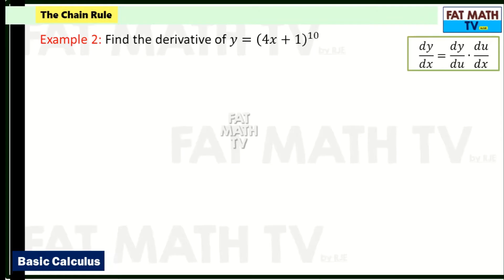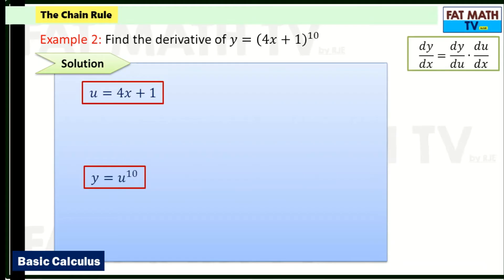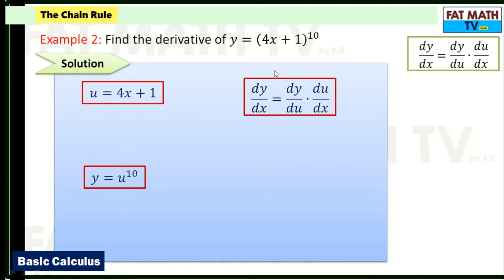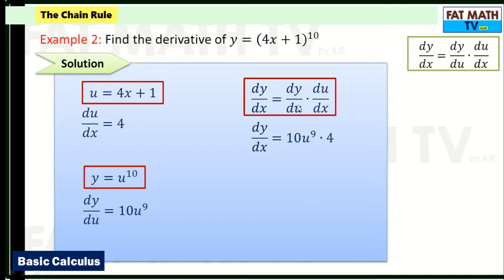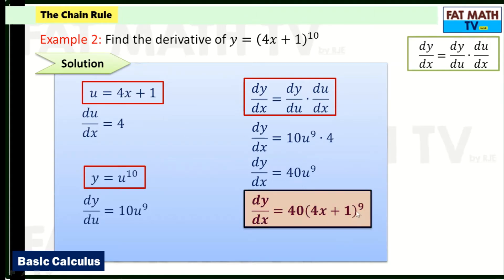For the next example, find the derivative of y equals (4x + 1) raised to the 10th power. Let u = 4x + 1, so y = u^10. Applying the power rule, the derivative of u^10 is 10u^9. The derivative of (4x + 1) is 4. So dy/dx = 10u^9 times 4 = 40u^9. Substituting back: dy/dx = 40(4x + 1)^9.